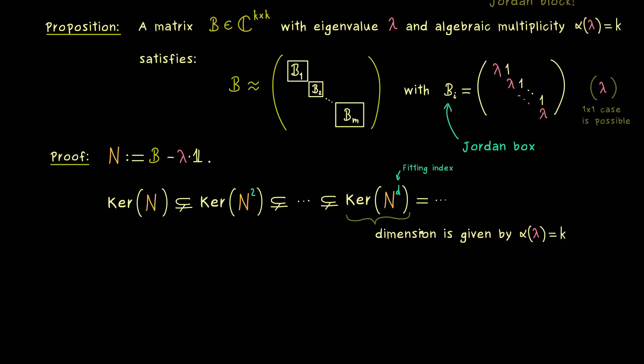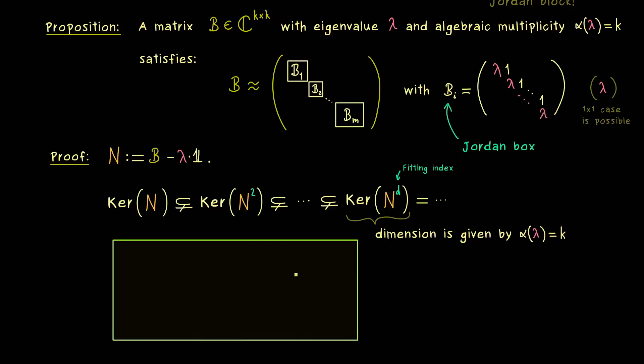This means in our case here, it's already the whole space ℂᵏ. So we don't have any problem at all to find k vectors from this generalized eigenspace that form a basis. So the idea is to choose the basis in such a way, that the matrix representation with respect to this basis is given by the nice Jordan boxes. And now I can tell you, this is exactly what we do with the so-called Jordan chains.